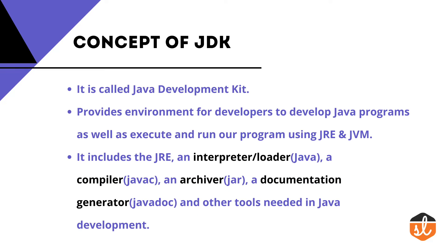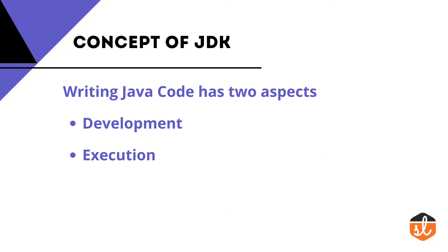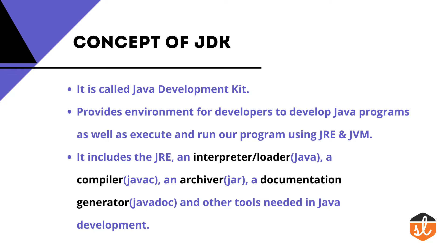First, we will discuss JDK — the Java Development Kit. Whenever we write any Java program, there are only two aspects: first is development and second is execution. JDK provides an environment for developers to develop Java programs as well as execute and run them using JRE and JVM. It includes the JRE, an interpreter, compiler, archiver, document generation, and other tools needed in Java development.